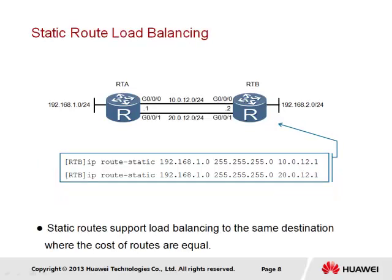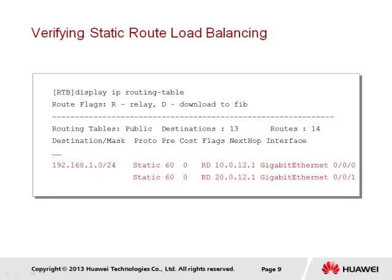The use of static routes to the same destination network over equal cost paths results in traffic being carried over both links in a process known as load balancing. This occurs due to the longest match, preference, and metric rules all failing to distinguish an ultimately better route. To achieve load balancing, two static routes must be defined, each specifying the same destination network and subnet mask or prefix but representing an alternative next hop over different Ethernet segments. Both static routes have a preference of 60 and equal cost metrics. Verifying the IP routing table confirms both routes are present with equal preference and cost, varying only in next hop and outbound interface.